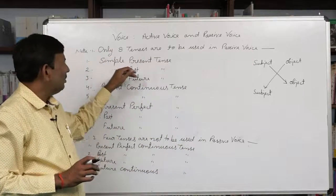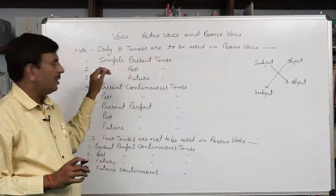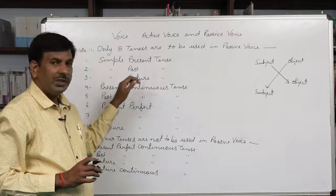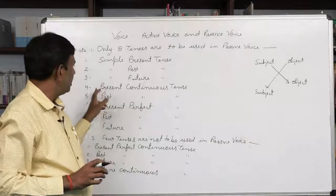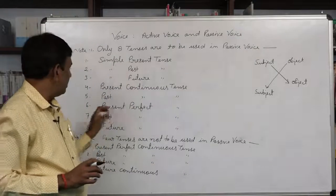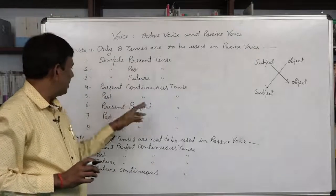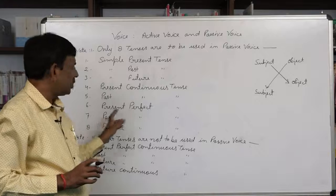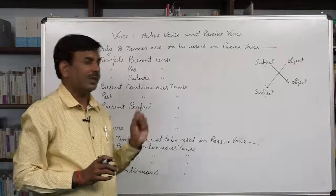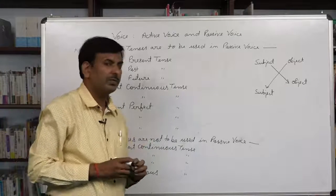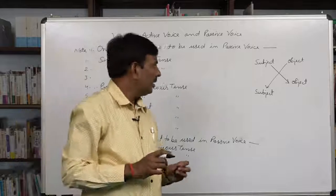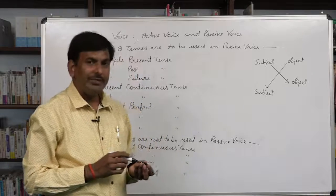All tenses means simple present tense, simple past tense, simple future tense, present continuous tense, past continuous tense, present perfect tense, past perfect tense, and future perfect tense — subject is to be changed into object in all of them.